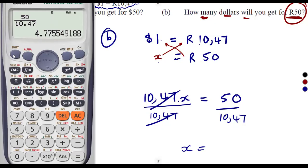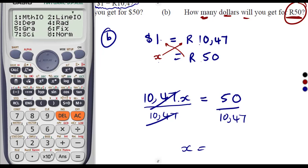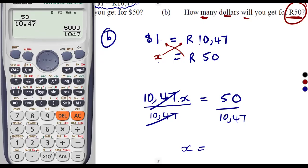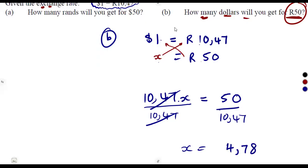Or you can use the calculator to change this — press Shift, go to Setup, number 6 which is Fix, then press 2 for two decimal places. As you can see, we are having 4.78. So how many dollars? We are referring to 4.78 dollars. For the 50 rand that you are given, it is going to correspond to 4.78 dollars.